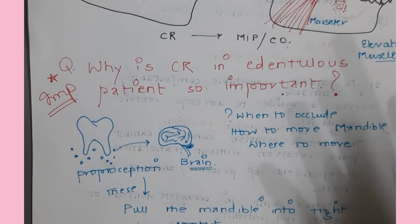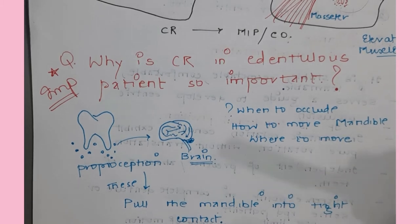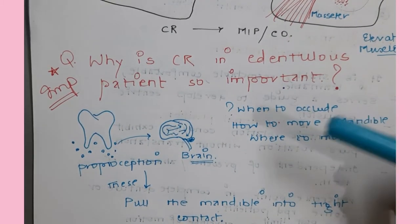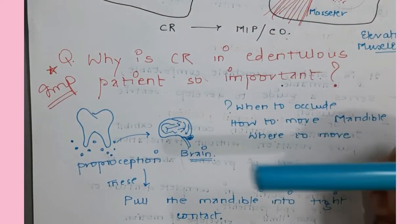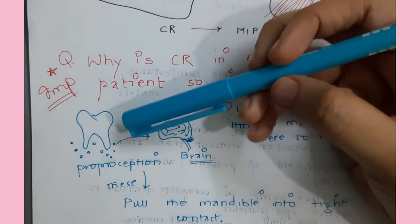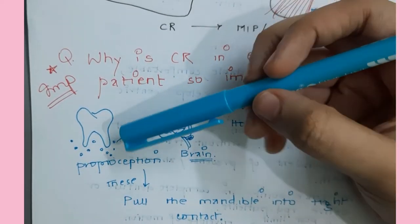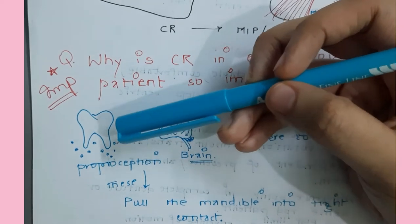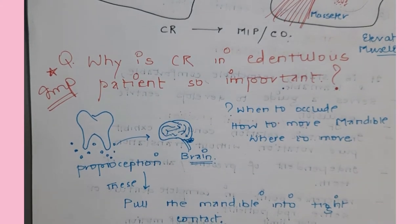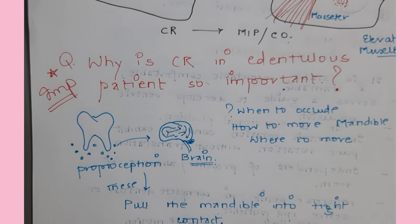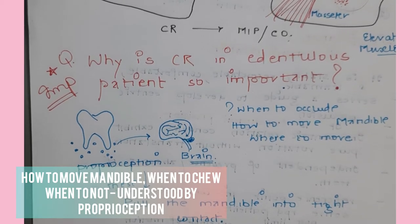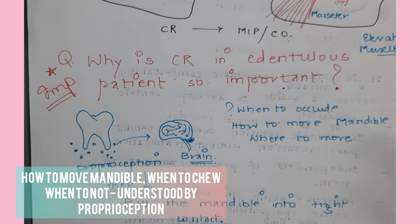Why is centric relation so important in edentulous patients? Teeth have proprioception, which controls the movement of the mandible. In edentulous patients, teeth are missing, so there is no proprioception - centric relation is guided by muscles alone. This is why edentulous patients have difficulty performing functional movements of the mandible. With no proprioception, no ligaments, no teeth, there is no maximum intercuspation possible in an edentulous patient.